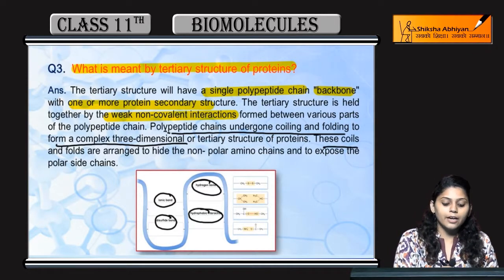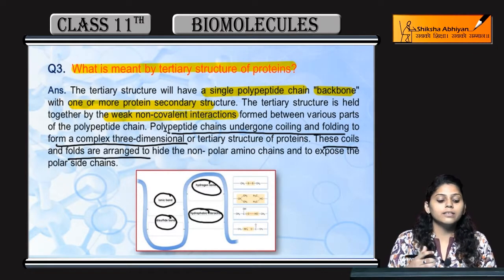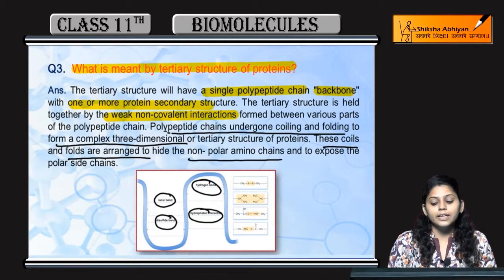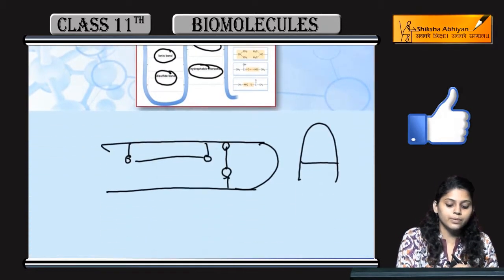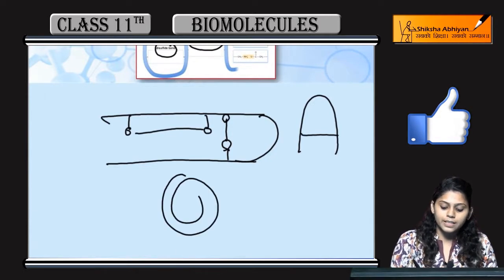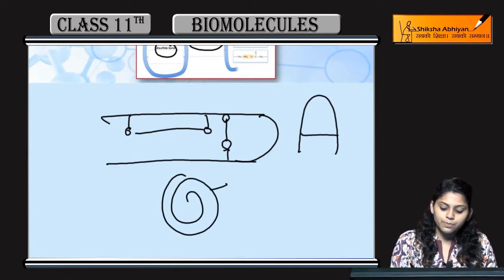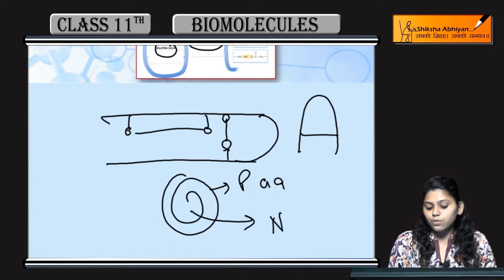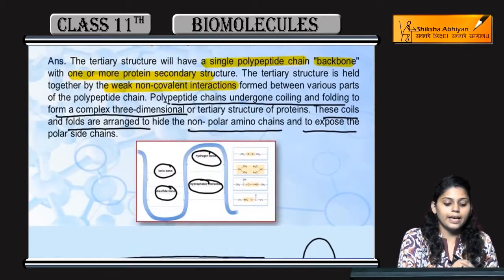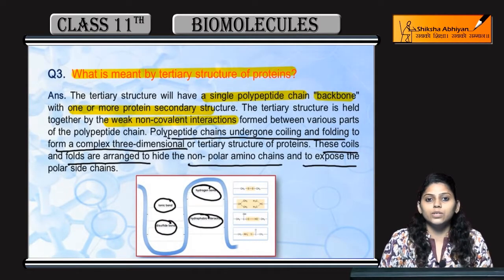These coils and folds are arranged together in such a way that non-polar amino acids जो होते हैं, वो अंदर की साइड होते हैं, और बाहर की साइड exposed होते हैं polar amino acids. Coiling हो जाएगी, तो exposed side होगी polar amino acids की, and hidden या फिर अंदर वाली side होगी non-polar amino acids की. So, ऐसे बनता है tertiary protein का structure.